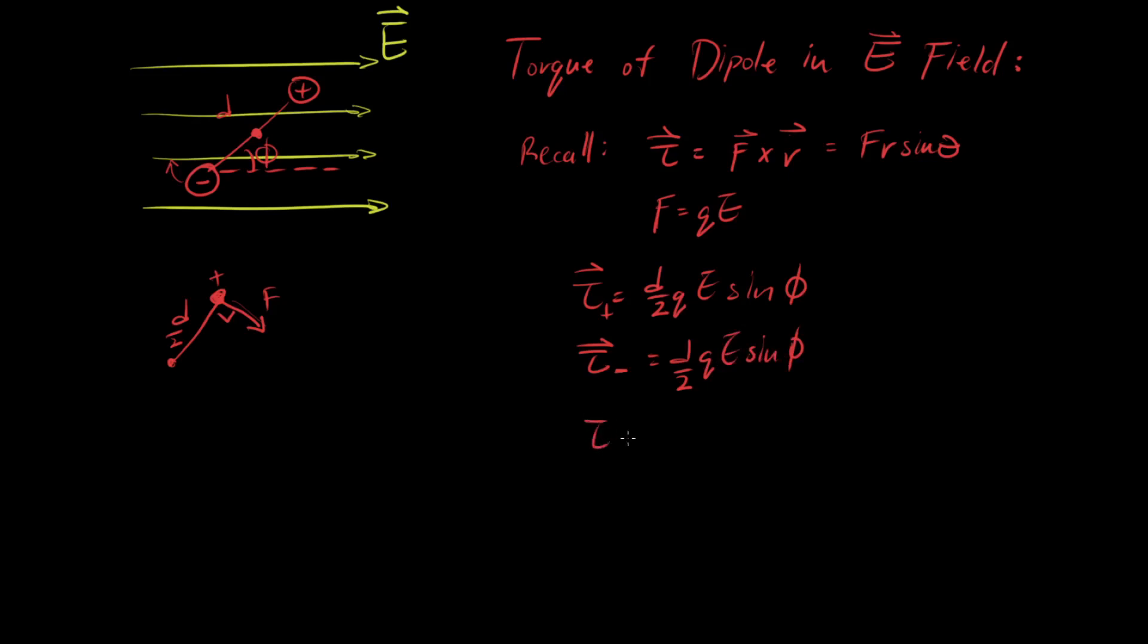And thus, torque net is equal to torque positive plus the torque on the negative charge. And thus, you get that the torque for a dipole in an E field is distance, charge, electric field, sine phi. And then recall that the dipole vector has a magnitude of q d, so we can just write p, E, sine phi.